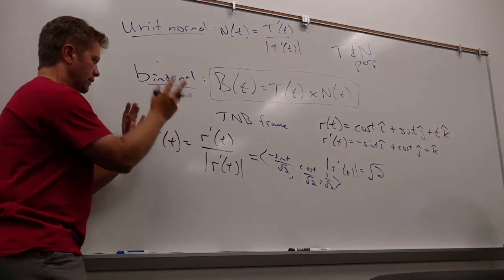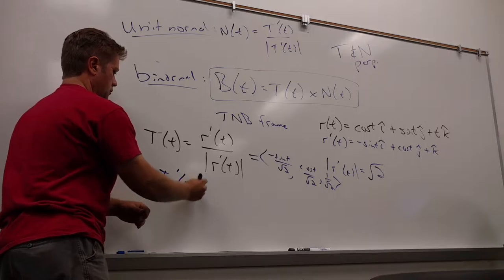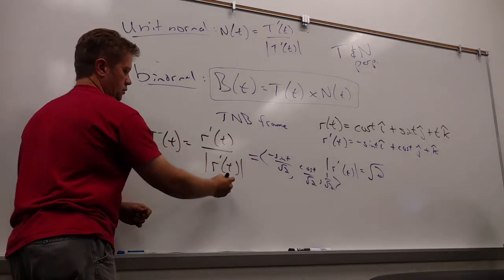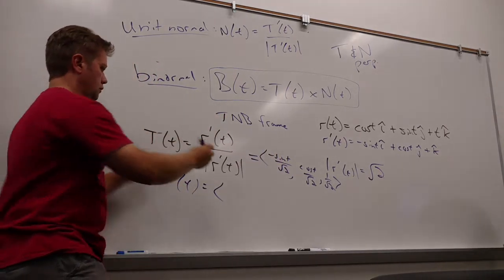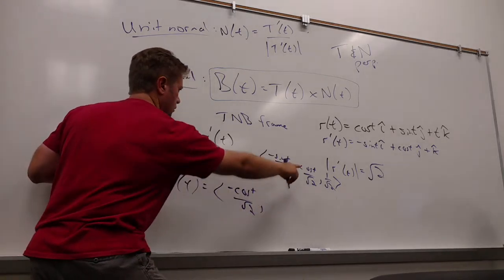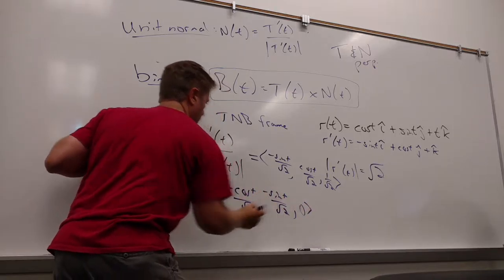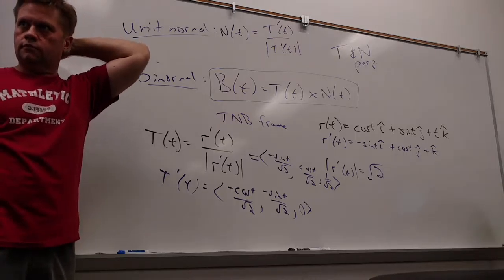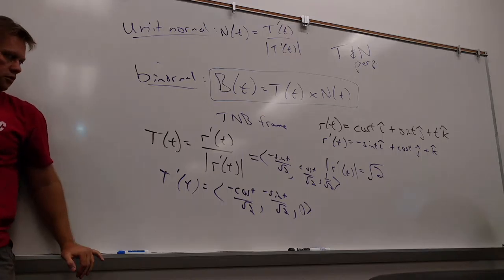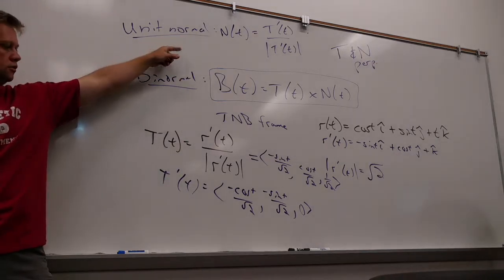Okay, so what do we have? We've got this so far. So now to do this, I need T prime. So what's that going to be? Yeah, negative cosine t over root 2, negative sine t over root 2, zero. I like that. And of course, what's the length? I need the length of that for this.